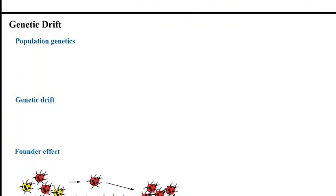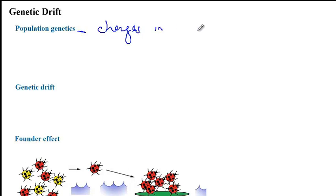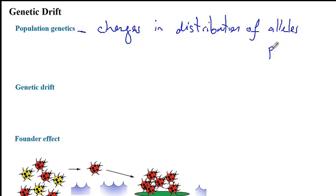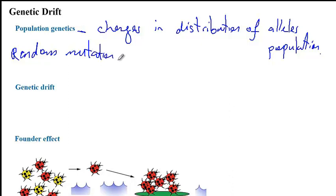Moving on to population genetics — the study of changes in the distribution of alleles in a certain population. There are many different factors that can affect population genetics, including random mutations. Any one of us can have a random mutation that over time affects the population genetics.